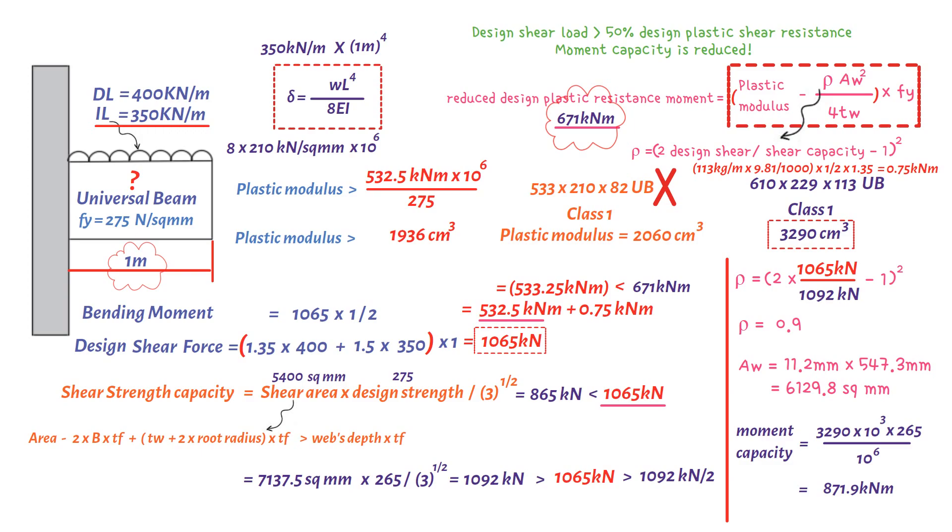Next, divide by the second moment of area of the steel beam, which is equal to 87,400 centimeters to the fourth for 610 by 229 by 113 universal beam.